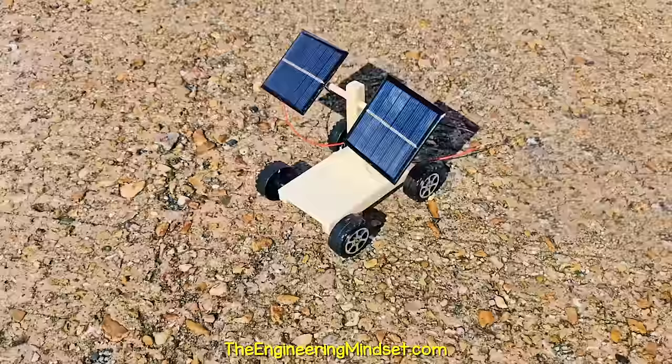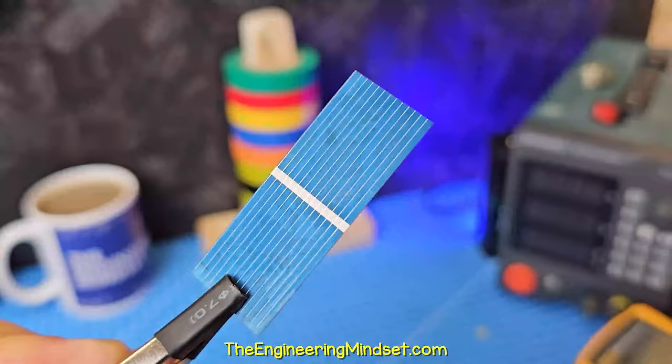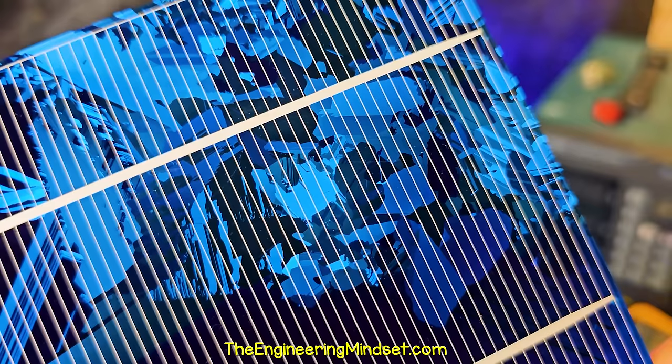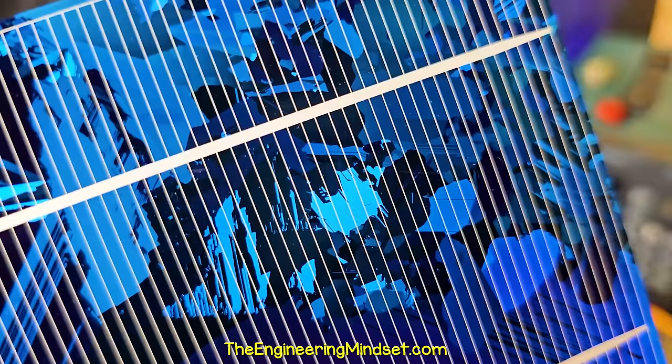You might have noticed that solar cells look different. There are crystalline types and thin film types. Where have you seen them used? Let me know in the comment section down below.